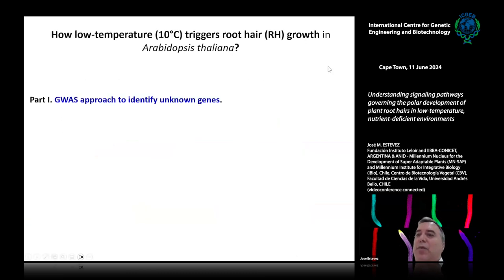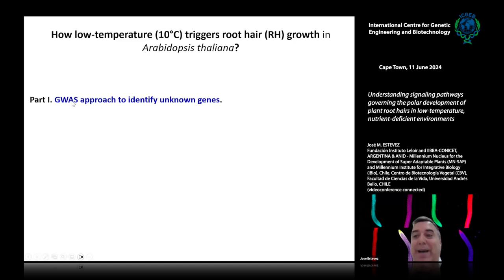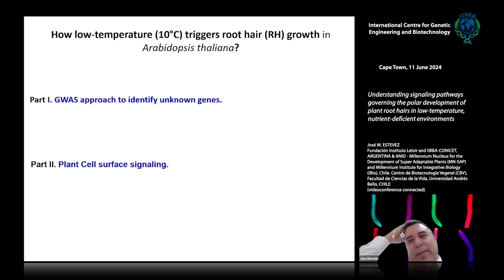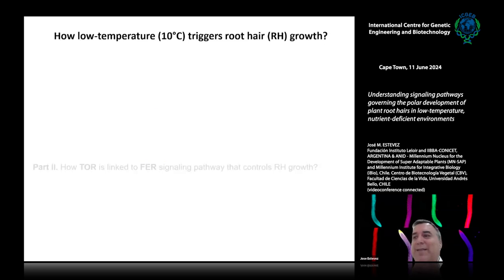Today I will tell you two small stories about these low temperature effects on root hair growth, approached in two completely different ways. One is an unbiased GWAS approach using natural variation. The second is a more targeted approach related to plant cell surface signaling — what happens at the surface of root hairs with perception of temperature and nutrients.